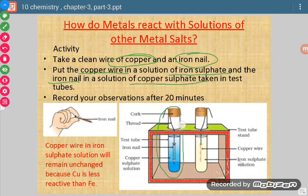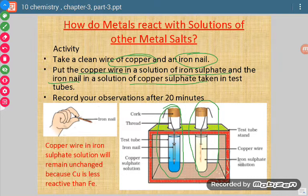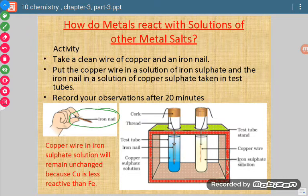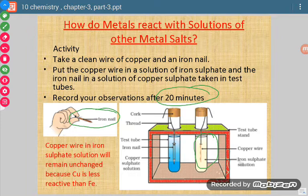This is the arrangement where you can see we have put an iron nail in the copper sulphate solution. And in this case we have taken copper wire and put it in the iron sulphate solution. After some time we will see that the iron nail gets a coating of copper. It means iron has replaced copper from its solution.